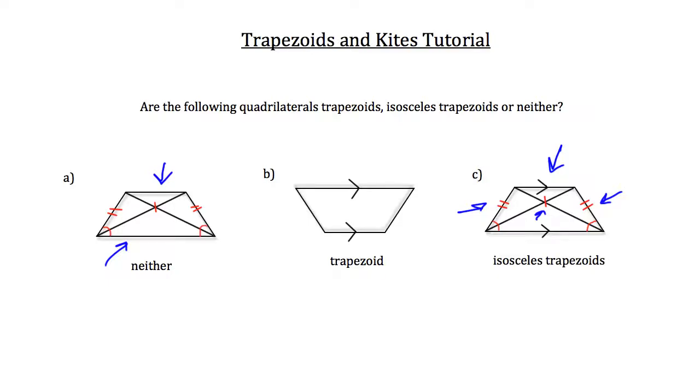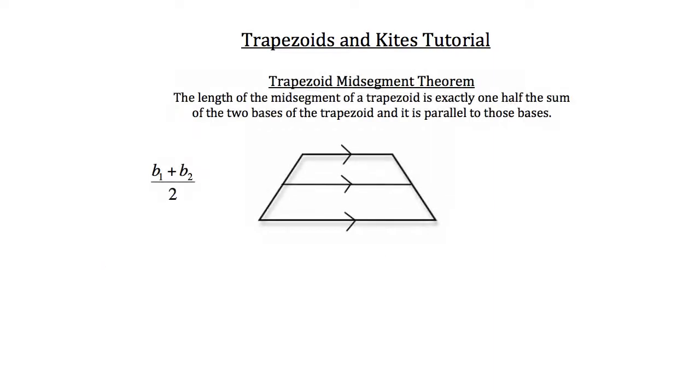Now hopefully you have the distinction between these two trapezoids. Let's move on to the trapezoid mid-segment theorem. The trapezoid mid-segment theorem states that the length of the mid-segment of a trapezoid is exactly one-half the sum of the two bases of the trapezoid, and it is parallel to those bases.